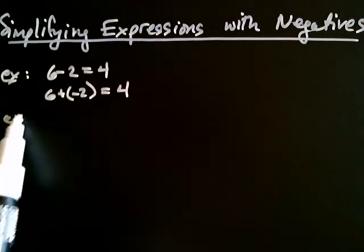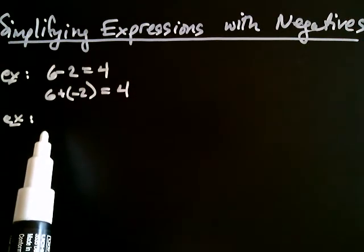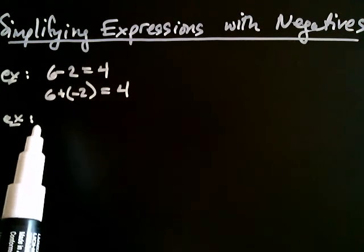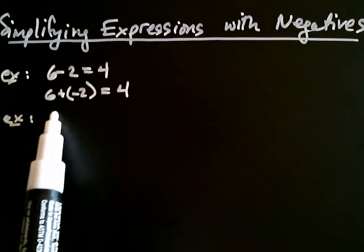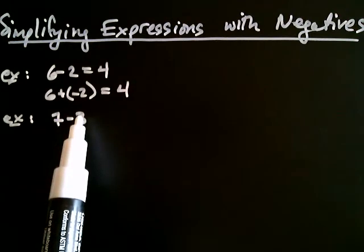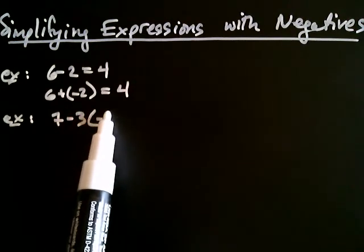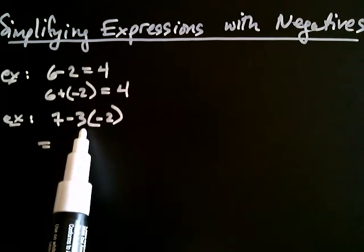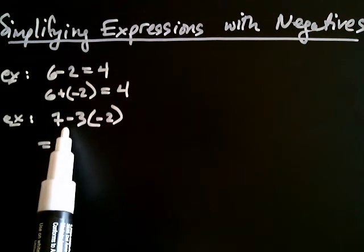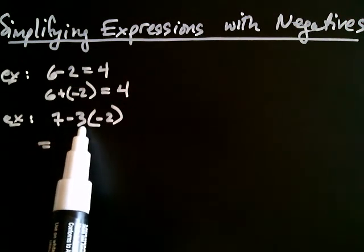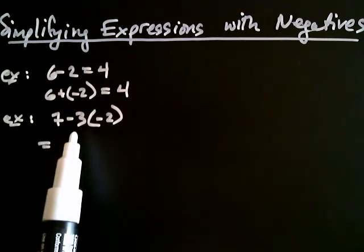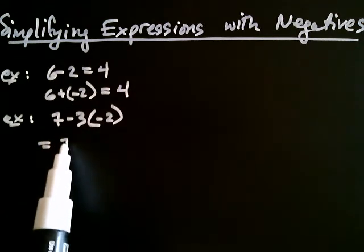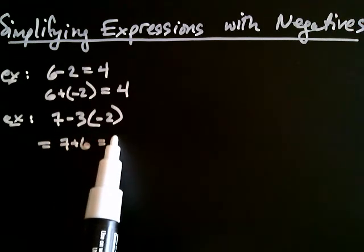We also discussed that you can play the game of converting subtraction to addition and taking the opposite of what follows if you have a product. For example, if you have 7 minus 3 times negative 2, you can take the subtraction and think of it as the negative belonging with the 3, then do the multiplication. So, we can think of this as negative 3 times negative 2, and that's positive 6. So, that would be 7 plus 6, and that's equal to 13.